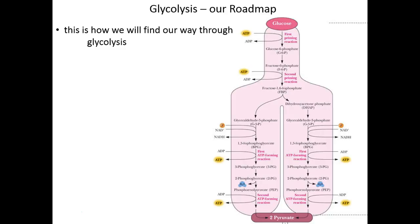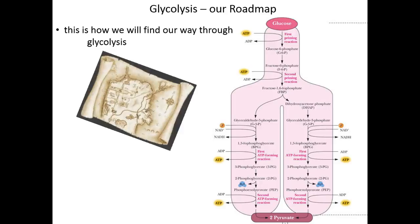Here is our roadmap. Glycolysis is a 10-step process — the arrows represent the steps catalyzed by enzymes. Step one: glucose is phosphorylated to glucose 6-phosphate. We said in the sugar lecture that this phosphorylation makes glucose reactive, because the negatively charged phosphate group locks glucose in the cell — too big, bulky, and negatively charged to diffuse through the cell membrane. Step four is a cleavage step where we go into two tracks. At the end of the 10 steps we have our two pyruvate molecules — two 3-carbon pyruvates from one 6-carbon glucose. This is our roadmap for finding our way through glycolysis.